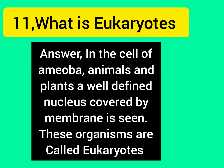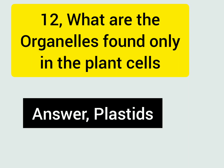What is eukaryotes? Answer: In the cells of amoeba, animals, and plants, a well-defined nucleus covered by a membrane is seen. These organisms are called eukaryotes.